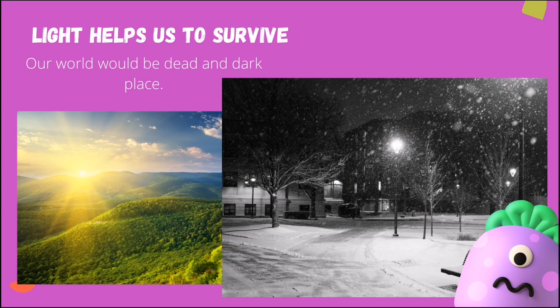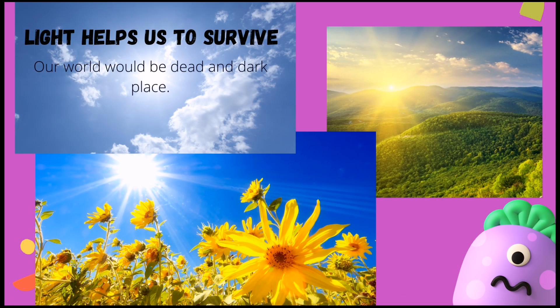How do we connect light to our survival on Earth? The sun is the main source of light. Without sunlight, our world would be a dead, dark place. Sunlight keeps the earth warm so it does not become a frozen ball in outer space. It is also a major component in photosynthesis, which is how plant life grows and gets nutrients. Sunlight is a source of energy as well as a source of vitamin D for humans.